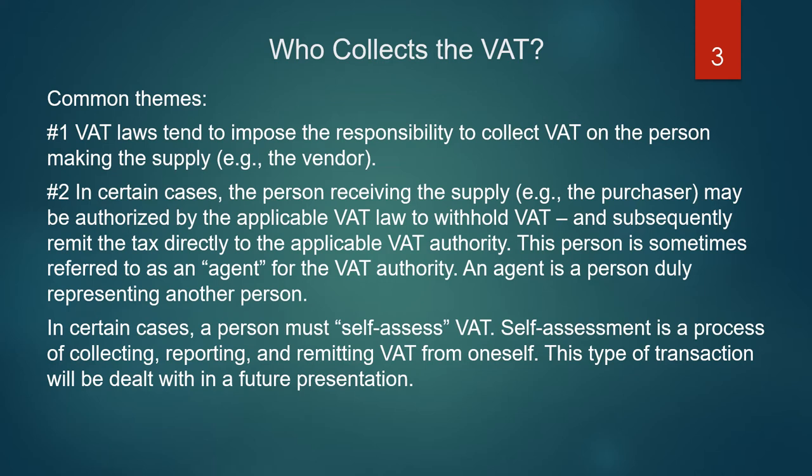Number 2: In certain cases, the person receiving the supply — for example, the purchaser — may be authorized by the applicable VAT law to withhold VAT, and subsequently remit the tax directly to the applicable VAT authority. This person is sometimes referred to as an agent for the VAT authority. An agent is a person duly representing another person.